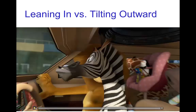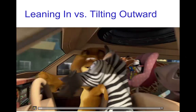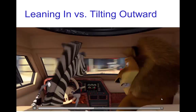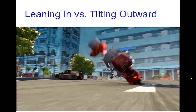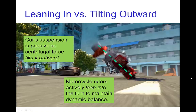Let's see a scene from Madagascar 3 that shows this. In that scene, again, the car's suspension is passive so the centrifugal force acts to tilt it to the outside of the turn, while the motorcycle riders naturally and actively lean into the turn to maintain dynamic balance.